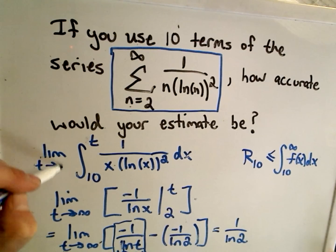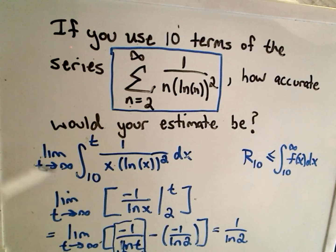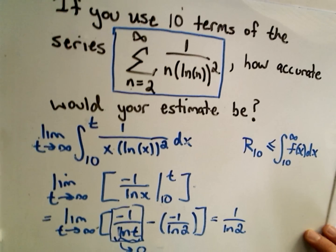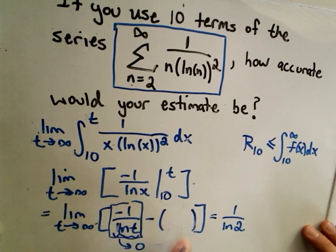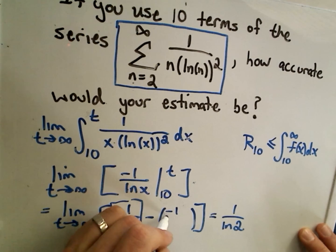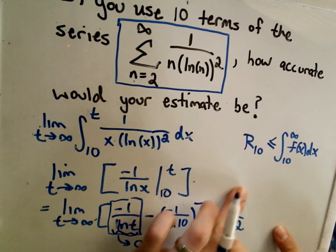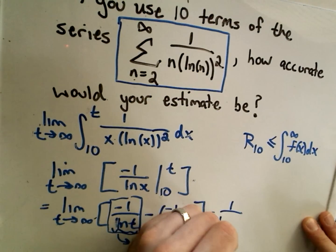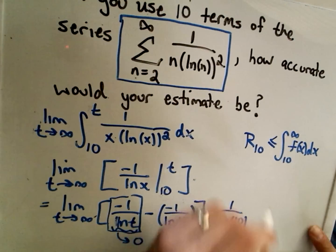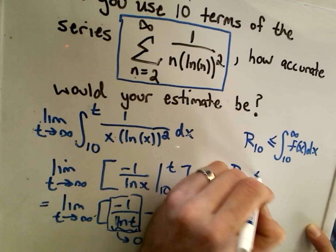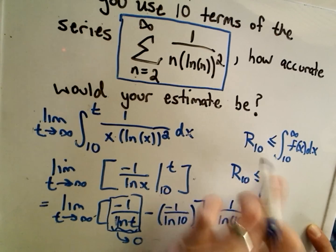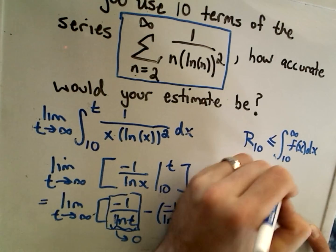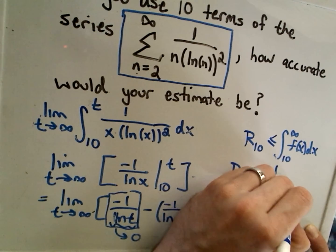With the lower limit changed to 10, when we plug in we get negative 1 over the natural logarithm of 10. The first limit still goes to zero, so the integral equals 1 over the natural logarithm of 10. This means if we sum up the first ten terms, our remainder will be correct with an error of at most 1 over the natural logarithm of 10.